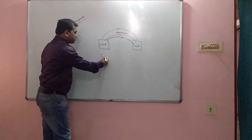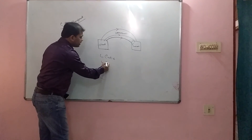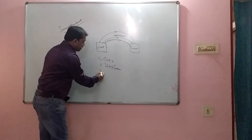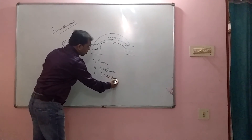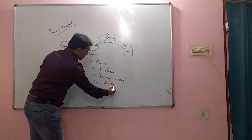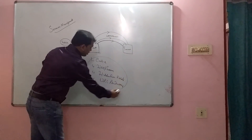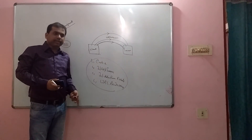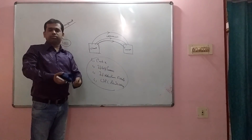Basically, there are four techniques to maintain the state of a user: one is cookie, another is HTTP session, another is hidden form fields, and another is URL rewriting. These are the four techniques and we can use any one of them to maintain the state of the user.